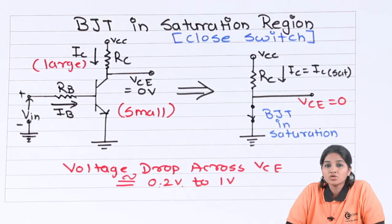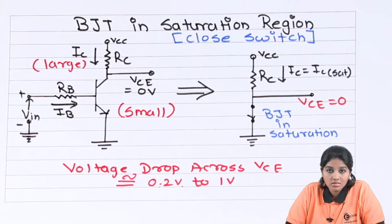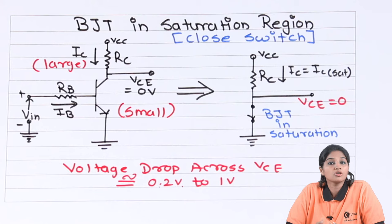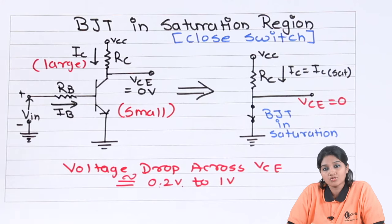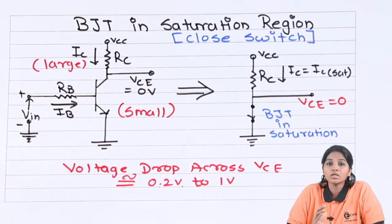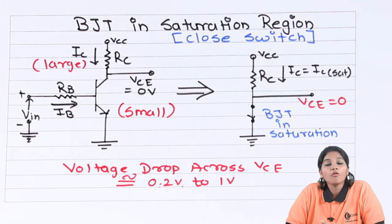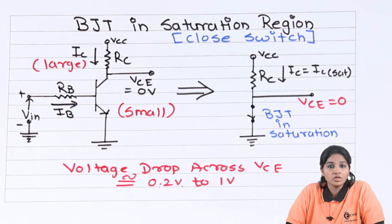We can use the transistor as a switch in many applications, like in a stepper motor controller, in timers and delay circuits, in amplifier circuits, and many more. So when a transistor operates in the saturation region, it acts as a closed switch, and when it operates in the cutoff region, it acts as an open switch. This is about the working of transistor as a switch and its applications in electronics.